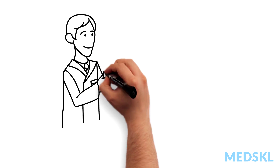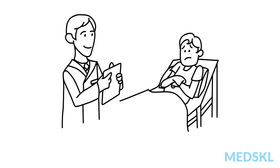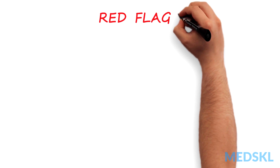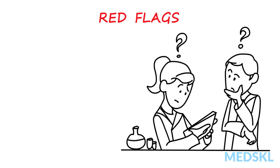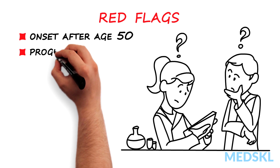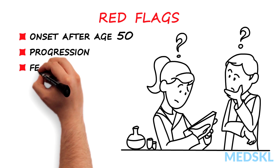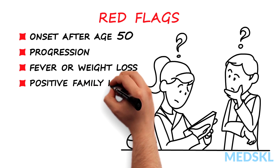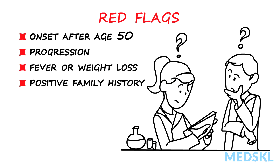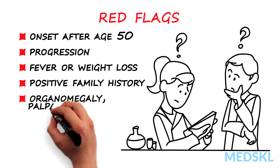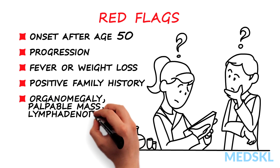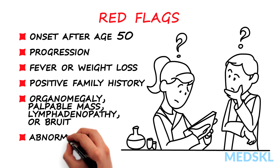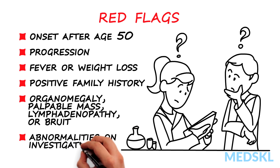A thorough evaluation of a patient presenting with chronic abdominal pain includes a complete history and physical exam. Red flags that point to an organic cause include onset of symptoms after age 50, progression in severity of pain, chronic abdominal pain associated with fever or weight loss, family history of inflammatory GI conditions or GI malignancies, organomegaly, palpable abdominal or rectal mass, lymphadenopathy, or bruit on examination, and any accompanying laboratory abnormalities when investigations are conducted.